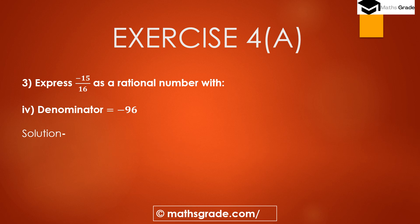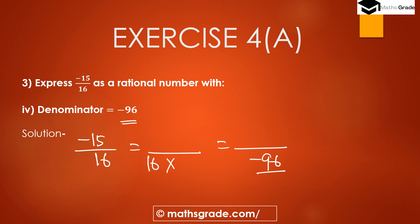Part 4: Find the equivalent rational number of minus 15 divided by 16 with denominator minus 96. Since 16 multiplied by 6 is 96, and we need minus 96, we multiply the denominator 16 by minus 6. We also multiply the numerator minus 15 by minus 6. Minus 15 multiplied by minus 6 is positive 90, because negative times negative is positive. So, the rational number is 90 divided by minus 96, which has denominator minus 96.